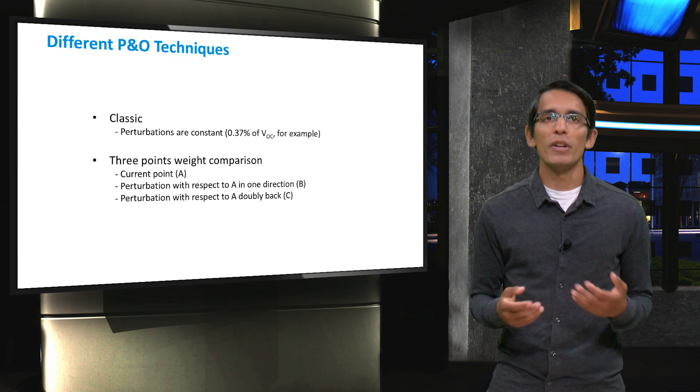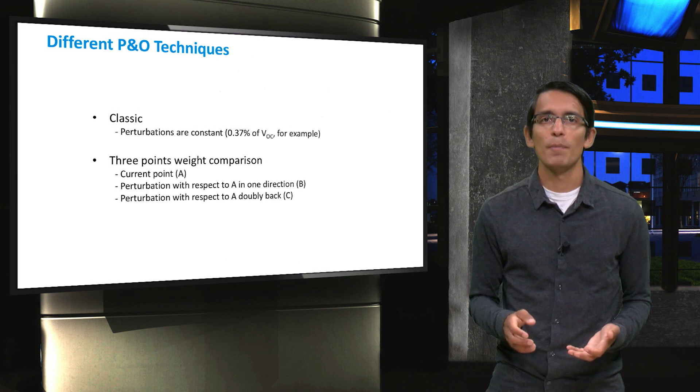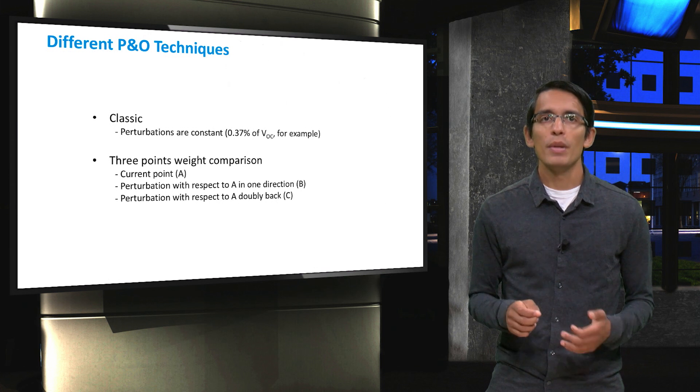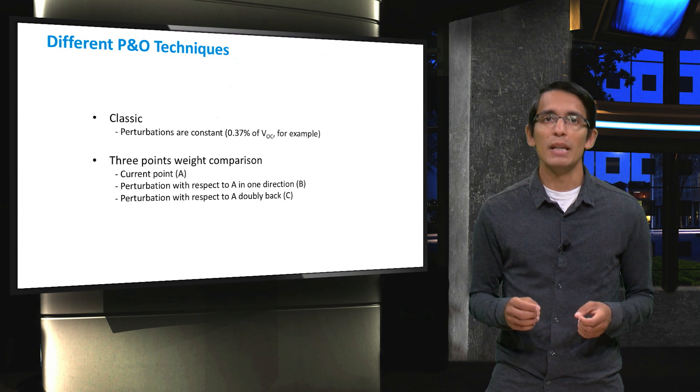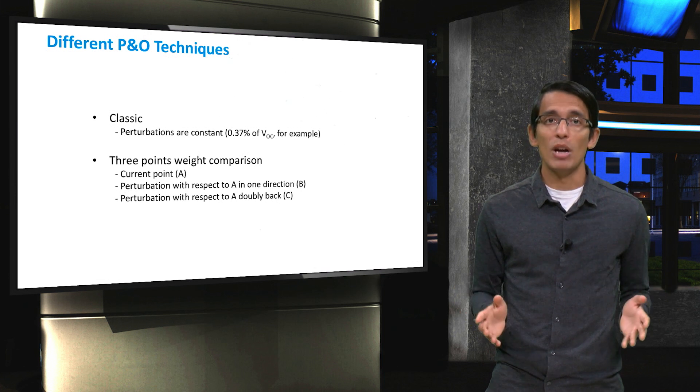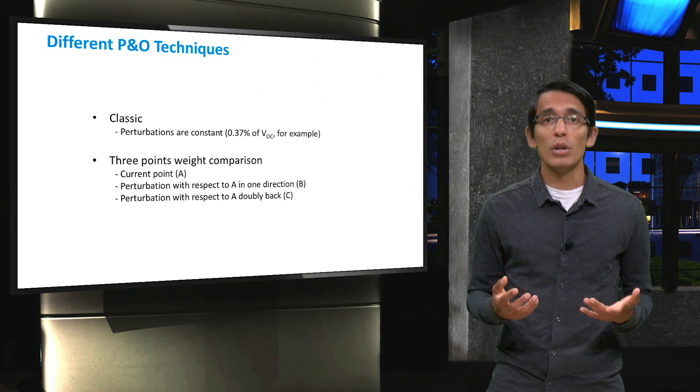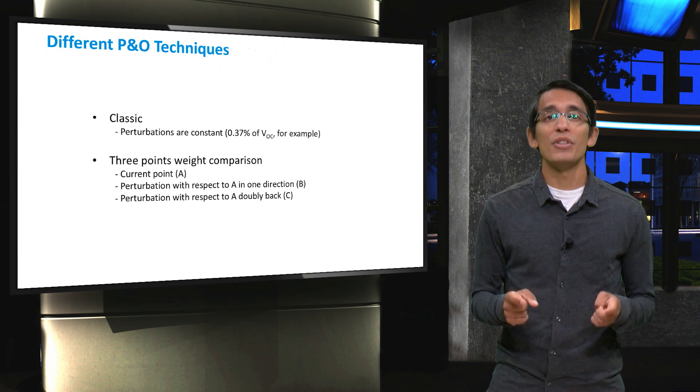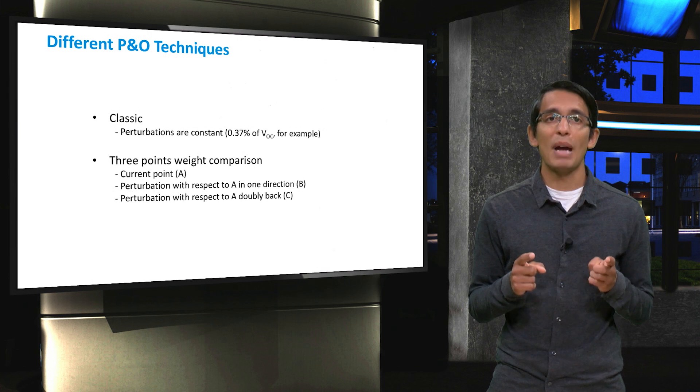However, a three-point comparison is also sometimes used. In this version of the algorithm, the system checks a perturbation in both directions, and then observes which perturbation has the greater power output. While a bit slower, this method is more robust once the system is closer to the maximum power point.